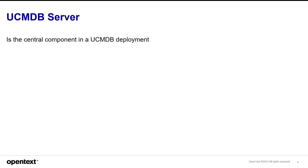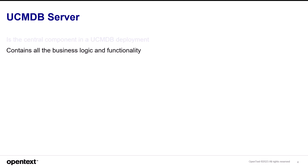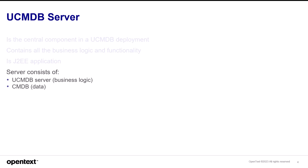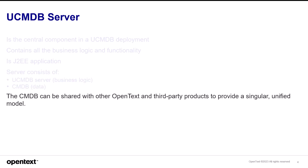The UCMDB server is the central component in a UCMDB deployment. It contains all of the business logic and functionality required by the administrator to examine data, create TQLs, create reports, and that sort of thing. It is a J2EE application and consists of the UCMDB server and the CMDB data. The CMDB can be shared with other OpenText or third-party products to provide a singular unified model — one view into your environment.